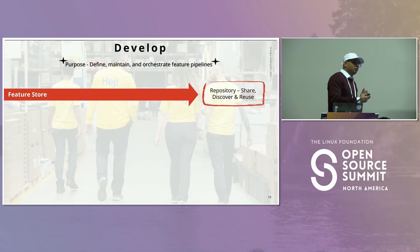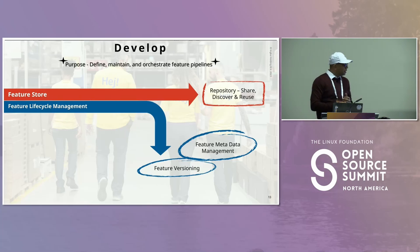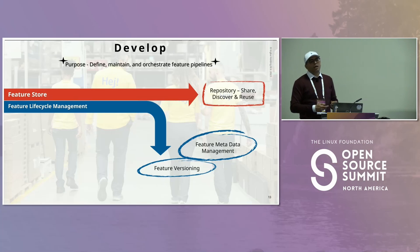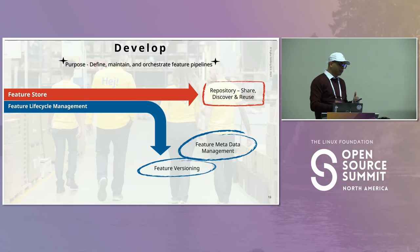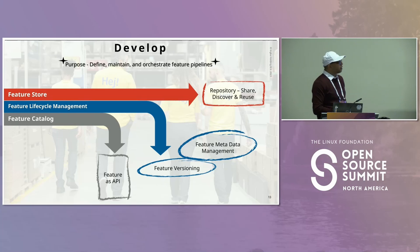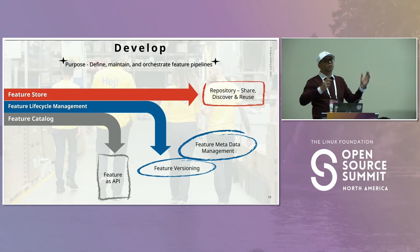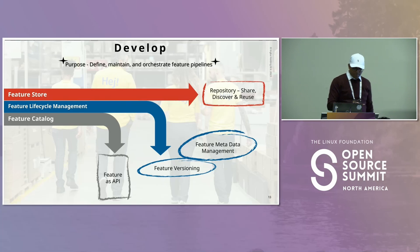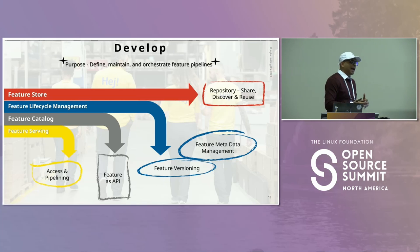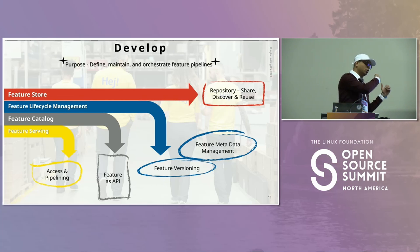We set it up as an inner-source project so feature contributions are acknowledged. Lifecycle management covers retiring features, versioning, and metadata — what columns of data were used to derive a feature — so users understand the consequence of using it. The feature catalog provides reporting: which features are most popular, how many models use them. It has both a graphical interface and an API. Finally, feature serving pipelines the feature data into the IDE for experimentation, as shown on the previous slide.